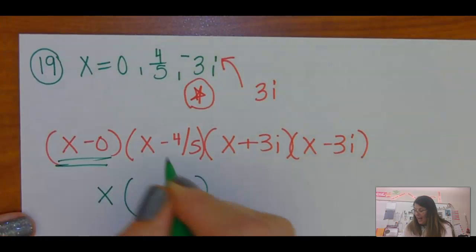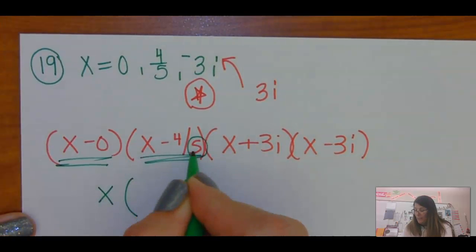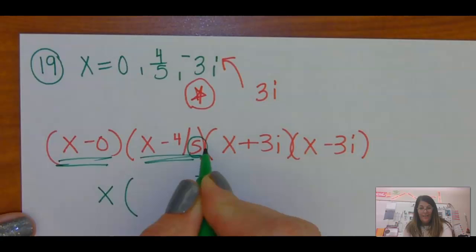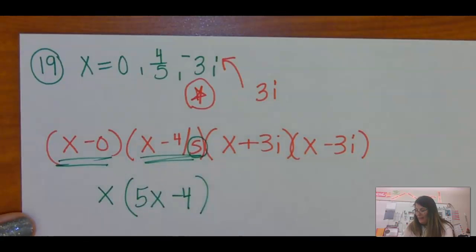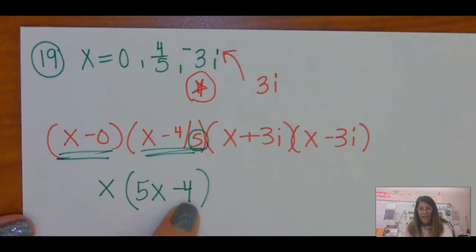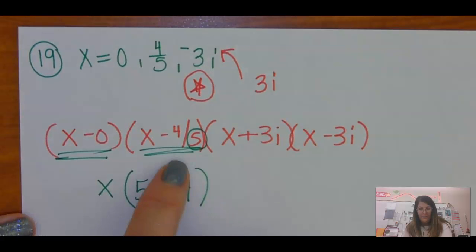Now, for this guy, usually we bring this up to the front, bottoms up. This is 5x minus 4, because if I solve that, I have 5x equals 4, and x equals 4 fifths.